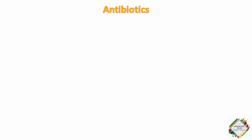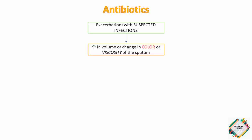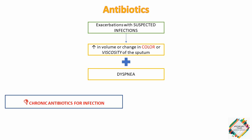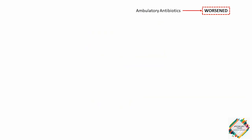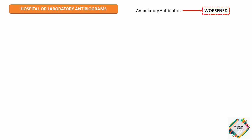Antibiotics are used to treat exacerbations with suspected infection, as evidenced by an increase in volume or change in color or viscosity of sputum, along with dyspnea. Prevention of infection with chronic antibiotic therapy is controversial and should be considered only in patients with more than 2 exacerbations per year. Ambulatory antibiotic therapy is recommended when there is evidence of worsening cough with purulent sputum and increased sputum volume. Hospital or laboratory antibiograms should be reviewed when selecting an appropriate agent.